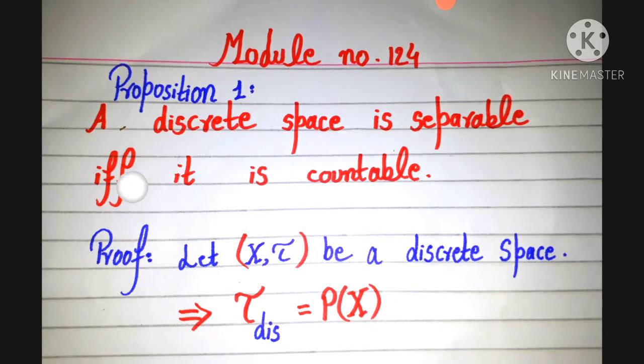Let (X,τ) be our discrete space. Suppose that X is a discrete space, it implies that τ_discrete is equal to power set of X.